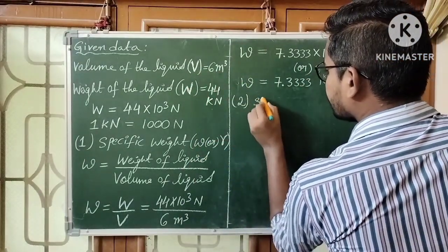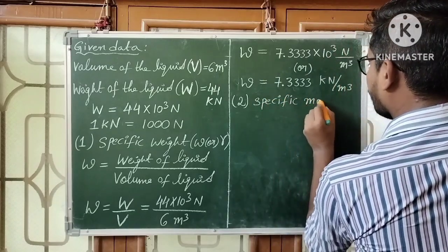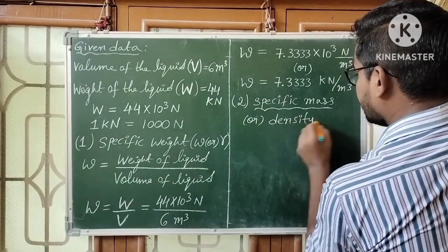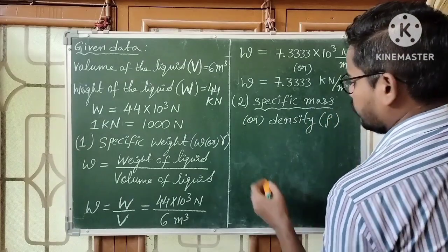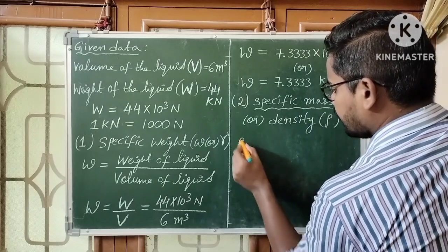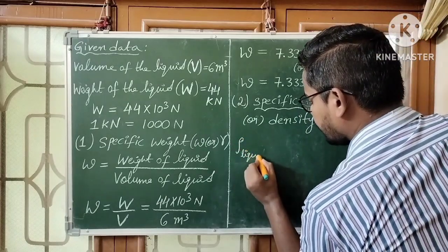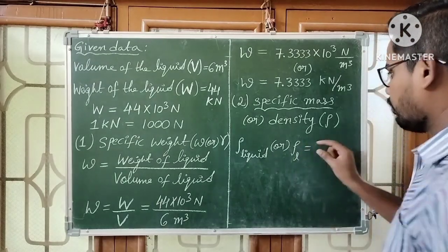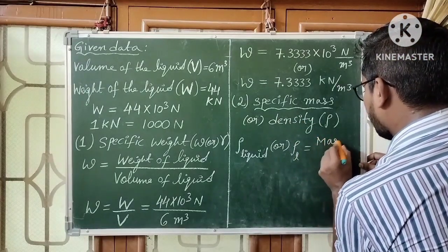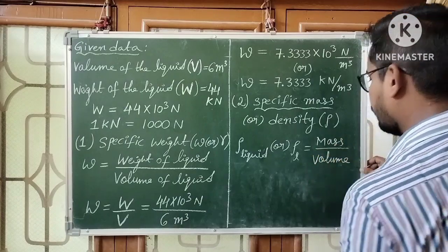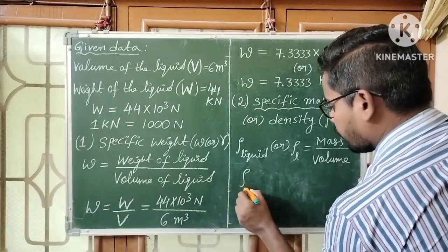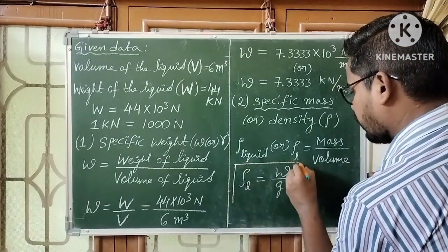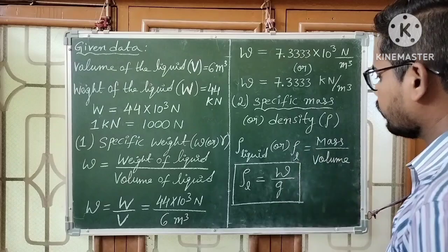Next we need specific mass. Specific mass is also known as density or mass density. We have two formulas: density of liquid equals mass of liquid by volume of liquid, or in terms of specific weight, density of liquid equals specific weight divided by acceleration due to gravity. I am going to use the second formula because we already have the specific weight value.